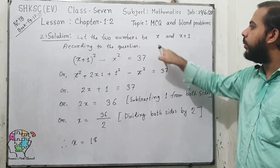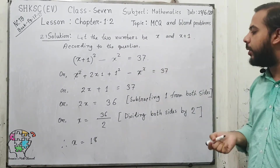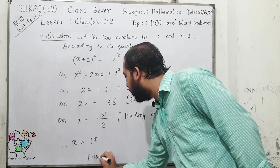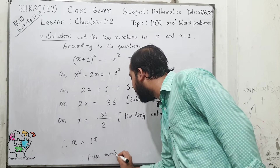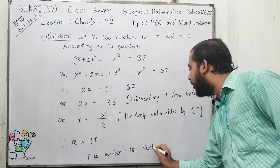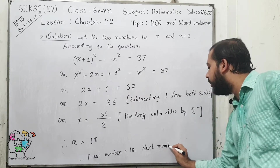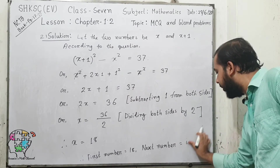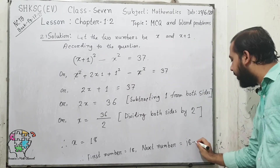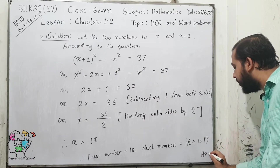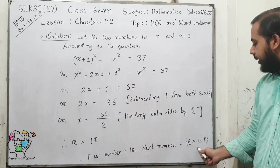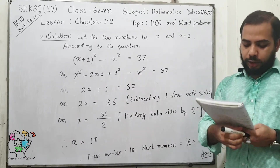So the first number is 18. The consecutive number will be x plus 1 equals 18 plus 1 equals 19. So the two consecutive numbers are 18 and 19, which are our required answers.